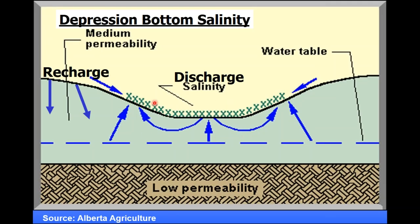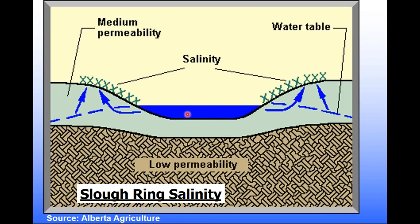Another common type is depression bottom salinity, where in glacial till soils with rolling topography, lower depressional areas develop salinity if wheat-fallow or any excess moisture raises the water table. Sometimes these depressions are filled with water most of the year, and you get salinity around these sloughs — what's called slough ring salinity — often with more water now just because of increased runoff from current cropping practices.